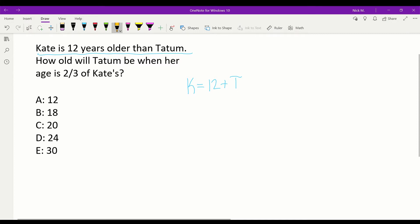And then the second sentence here, how old will Tatum be when her age is two-thirds of Kate's? We can rewrite this to be Tatum's age, T equals two-thirds times K. And from here, it's relatively straightforward. So what we want to do is replace one of these letters so that we have only one letter in the entire equation.